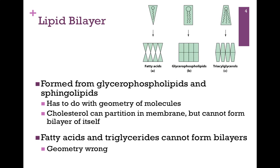Let's do a comparison. If we look at the top of the screen on the far left, we have a fatty acid with a polar head group and a narrow tail, so the overall geometry is a triangle. If we try to associate that into a rectangular form, it can't be done — instead we have gaps. This means that some cellular components would leak out and others would leak in, so that won't work.